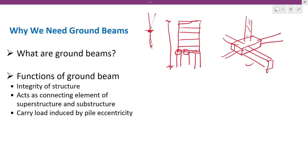If you don't have a rigid structure like an outrigger — we provide outriggers in high-rise buildings at upper levels to control lateral deflection — the same principle applies here as well. The ground beams together with the pile caps act as a rigid diaphragm, controlling the lateral deflection. With the ground beam, deflection will be much less.